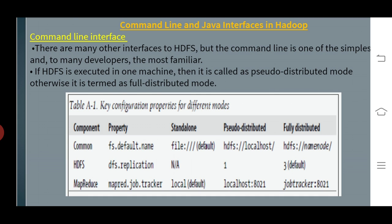When the Hadoop file system is executed on one machine, it is called pseudo-distributed mode; otherwise it is termed fully distributed mode. A table illustrates the key configuration properties for different modes. The component is the Hadoop file system, and the property dfs.replication is N/A for standalone, 1 for pseudo-distributed, and 3 by default for fully distributed.